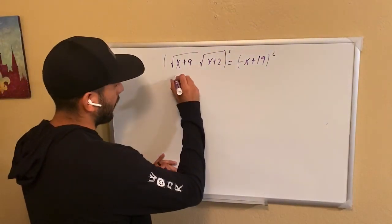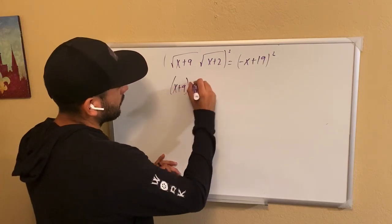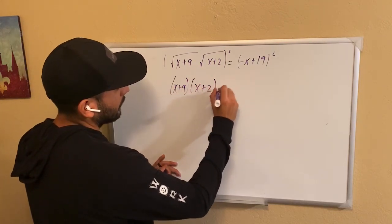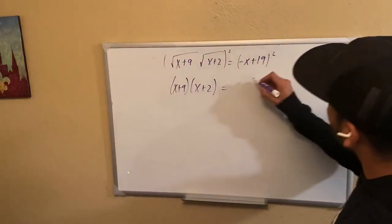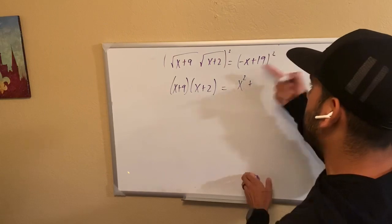So that becomes x plus 9 times x plus 2 and equal to, look at this one, tricky. And again, a lot of people are going to think, oh, this is x squared plus 19 squared, which is 361. No, don't want to do that.